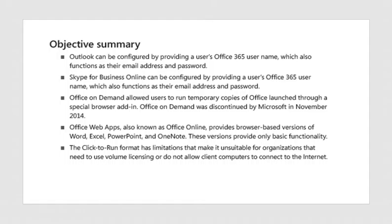Objective summary: Outlook can be configured by providing a user's Office 365 username, which also functions as the email address and password. Skype for Business Online is configured the same way. Office On Demand allowed users to run temporary copies of Office launched through a special browser add-in, and was discontinued in November 2014. Office Web Apps, also known as Office Online, provides browser-based versions of Word, Excel, PowerPoint, and OneNote, offering only basic functionality. The Click to Run format has limitations making it unsuitable for organizations needing volume licensing or lacking internet connectivity.